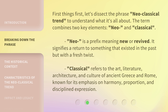Neo is a prefix meaning new or revived. It signifies a return to something that existed in the past but with a fresh twist. Classical refers to the art, literature, architecture, and culture of ancient Greece and Rome, known for its emphasis on harmony, proportion, and disciplined expression.